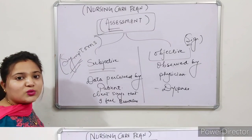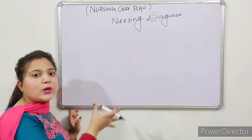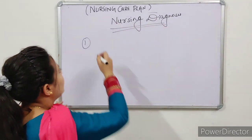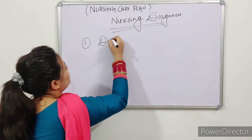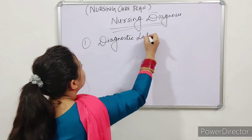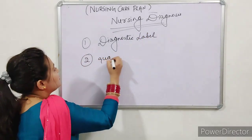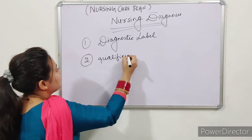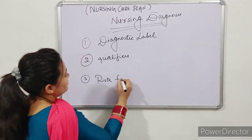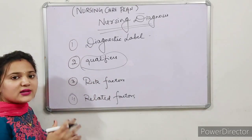The second step is nursing diagnosis. In nursing diagnosis, the first component is the diagnostic label, second is qualifiers, and third is risk factors.